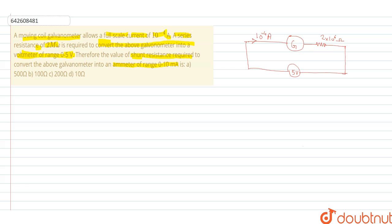In this situation we can see that the total voltage is 5 volt. According to conservation of energy, we have equation: 5 volt is equal to 10 to the power minus 4 ampere into galvanometer resistance plus 10 to the power minus 4 into 2 into 10 to the power 6 ohm resistance.